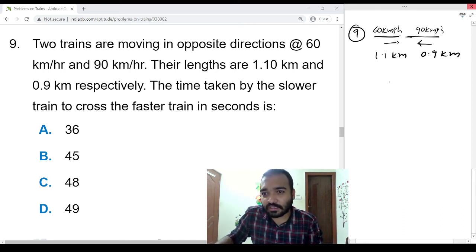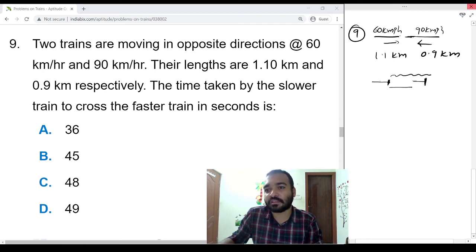So this means the slower train is here, after crossing, starting will come here, so total distance covered is this distance 1.1 plus 0.9, that is 2 kilometers. 2 kilometers equals, as both the trains are traveling in opposite direction, 60 plus 90, that is equal to 150 km/h times time.